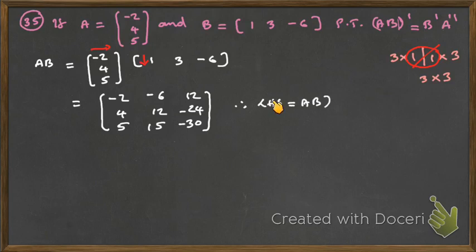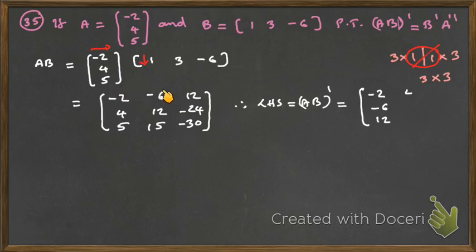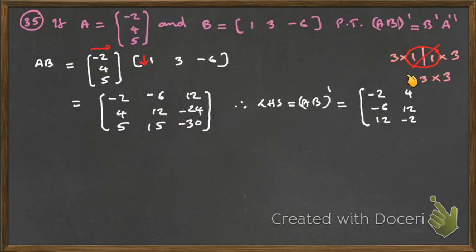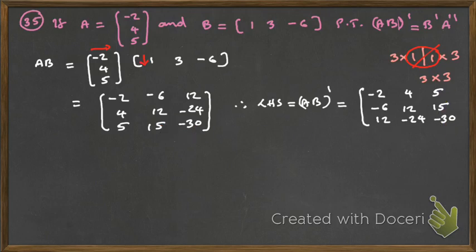Now LHS = (AB)^T. Reading each row and writing as the corresponding column: first row −2, −6, 12 becomes first column; second row 4, 12, −24 becomes second column; third row 5, 15, −30 becomes third column. That gives the 3×3 transpose matrix as the LHS.